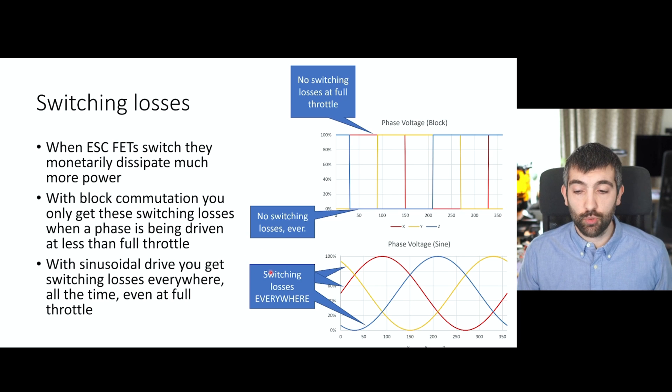With sinusoidal drive, we are basically partly driving the phase all of the time. There's only an instant where we have the phase fully on and there's only an instant where we have the phase at zero. All the rest of the time, we are driving the phase somewhere between zero and 100%, and that means that we're switching the FETs, that means that we're introducing switching losses, and that's happening all the time everywhere. And that does cause the ESC to dissipate a bit more power and it will cause the ESC to heat up a bit more than if you were doing block commutation.